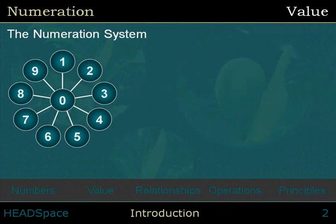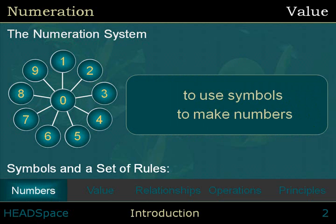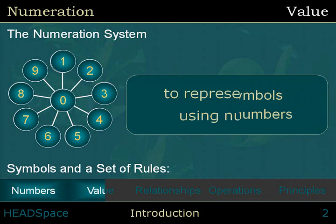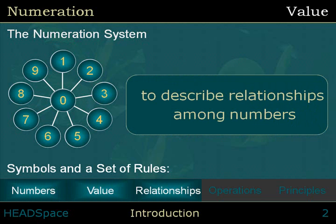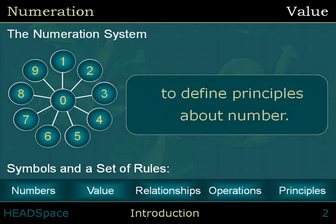The numeration system includes symbols that represent digits and a set of rules to use those symbols to make numbers — to represent larger numbers, to represent value using numbers, to describe relationships among numbers, to perform operations on numbers, and to define principles that hold true about numbers.